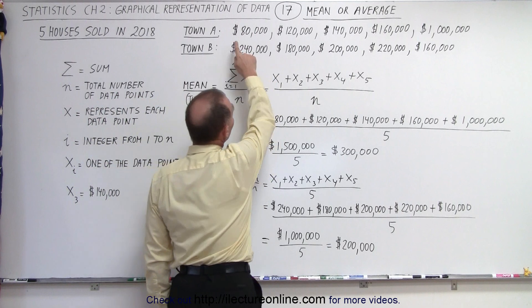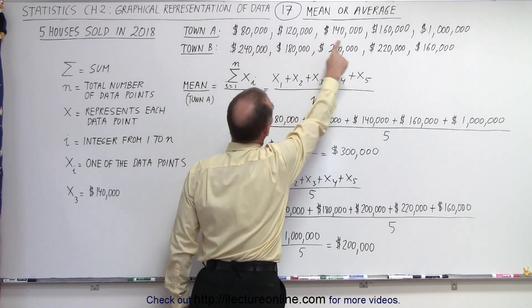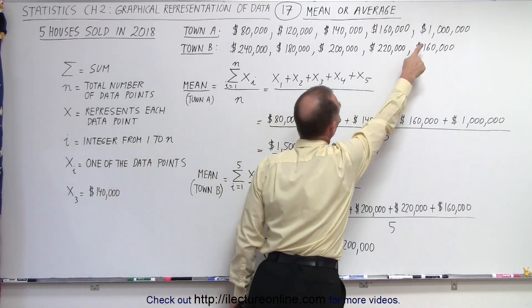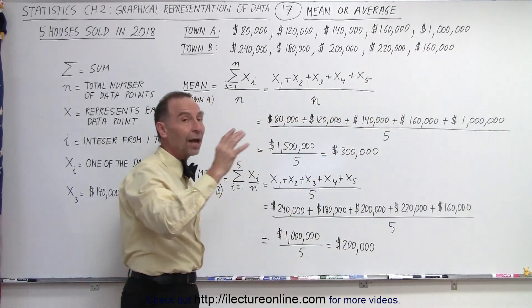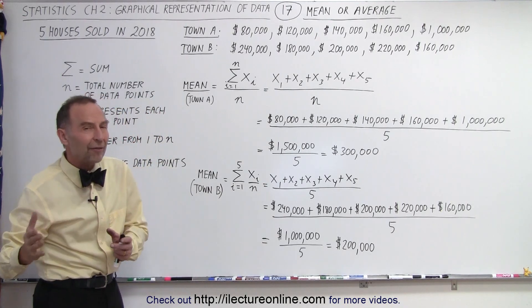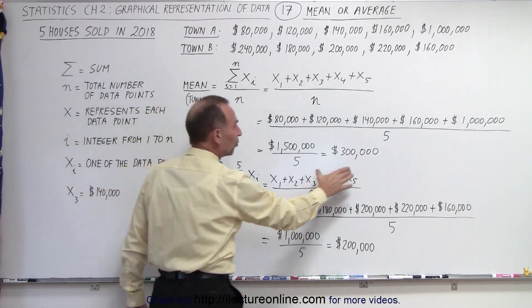Because notice that the typical house price is far lower in town A compared to town B. This one house that sold for much more money than all the other houses in either town A or town B skewed the average value to as much as $300,000.